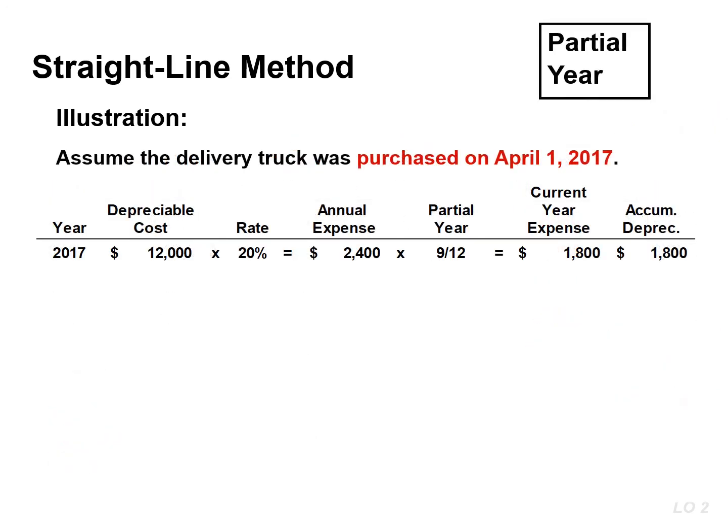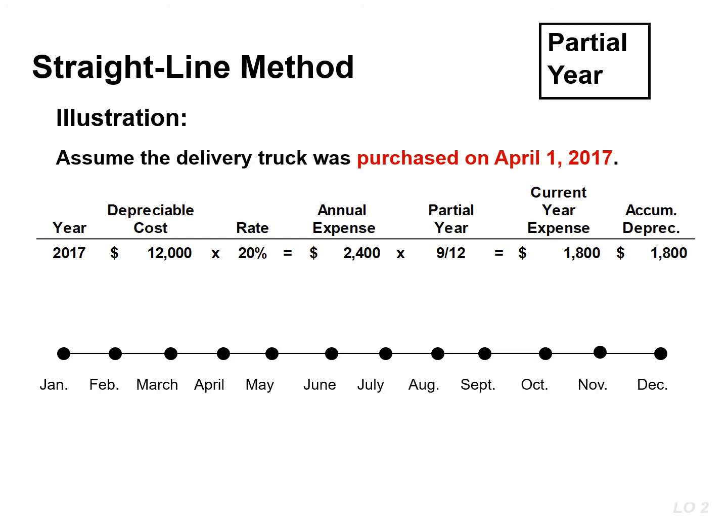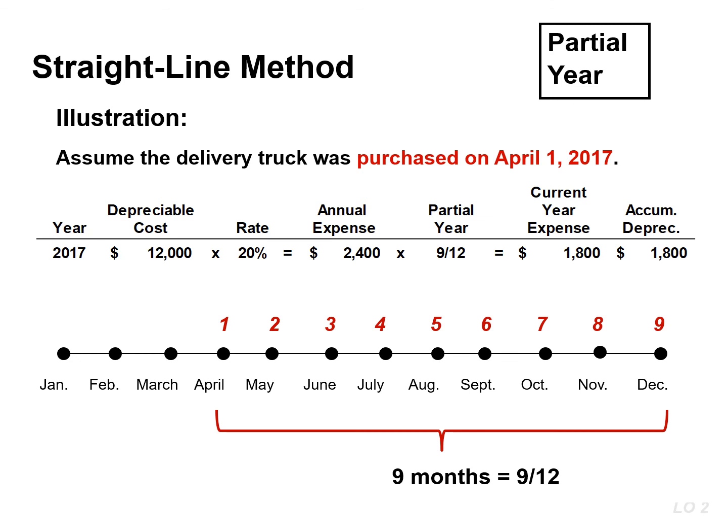If an asset is purchased during the year rather than on January 1st, the annual depreciation is prorated for the portion of the year it is used. In this example, Bill's Pizza purchases the delivery truck on April 1st. The company would use the truck for 9 months. The depreciation would be $1,800, calculated by taking the annual depreciation of $2,400 and multiplying that by 9/12 or 75%.